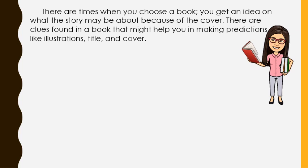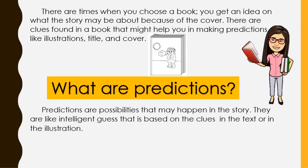Children, there are times when you choose a book, you get an idea on what the story may be about because of the cover. There are clues found in a book that might help you in making predictions like illustrations, title, and cover. What are predictions? Predictions are possibilities that may happen in the story. They are like an intelligent guess that is based on the clues in the text or in the illustration. You can predict the next event, the ending, and possible solution to the problem posed. Making predictions helps you pay attention to stories as you listen and read them.